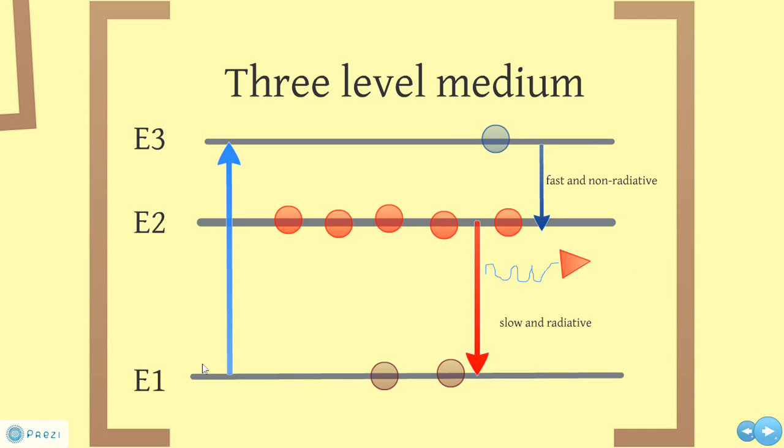In a three-level medium, electrons from E1 are excited directly into the transition state, E3, and the lifetime of this state is very short. Electrons decay very quickly into E2 without emitting any radiation. Comparatively, transition from E2 to E1, which results in radiation, is slow. As a result, the time taken for electrons to move from E1 to E2 via E3 is much shorter than the time taken to move from E2 to E1, and population inversion takes place, resulting in amplified, coherent radiation being produced.